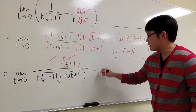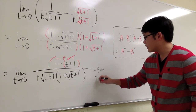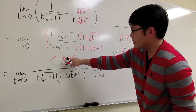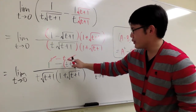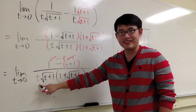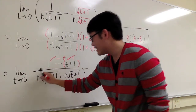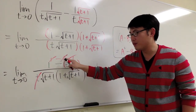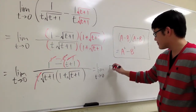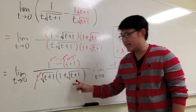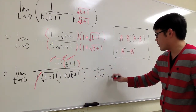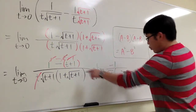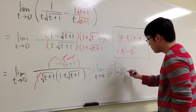Let me rewrite this. This is the limit as t approaches 0. After canceling the t's, we have negative 1 on the top, over square root of t plus 1 times 1 plus square root of t plus 1.